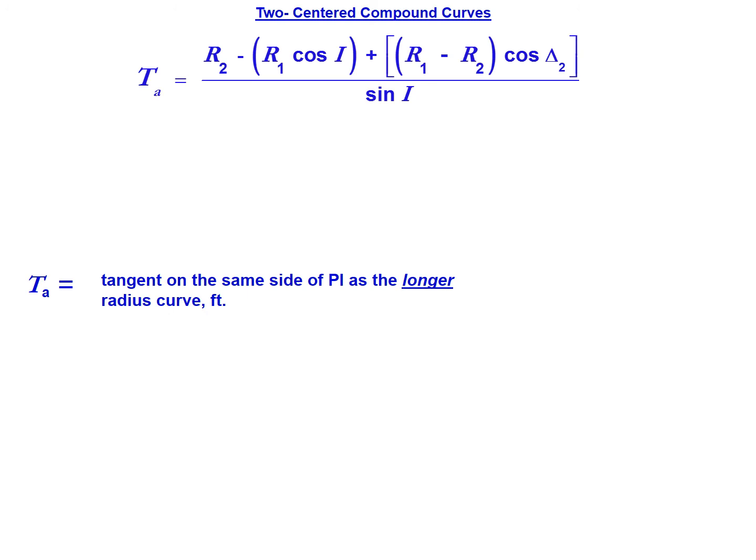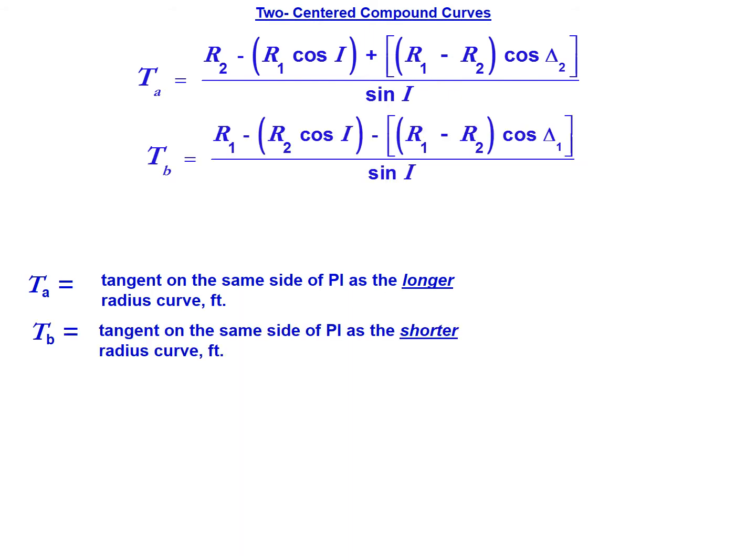When we look at two-centered compound curves, there are two key equations for solving these curves: one is solving for T sub A and the other solving for T sub B. T sub A is the tangent length on the side of the PI that has the longer radius curve, and T sub B is the tangent on the side of the PI with the smaller radius curve.